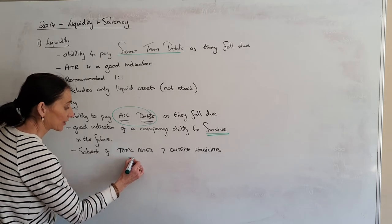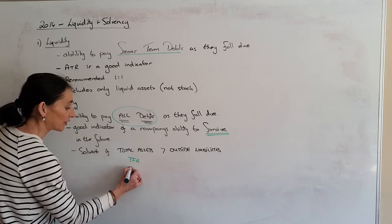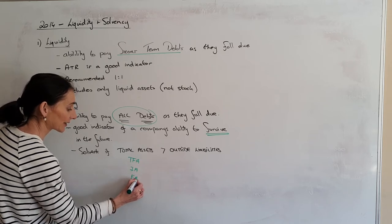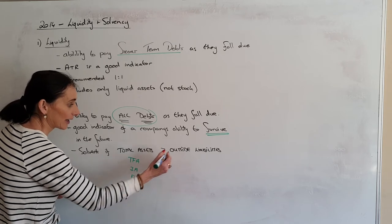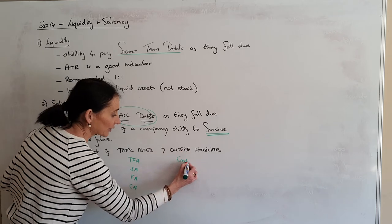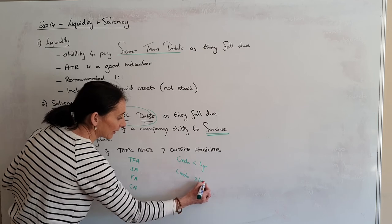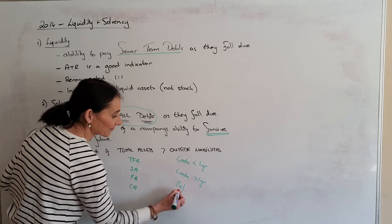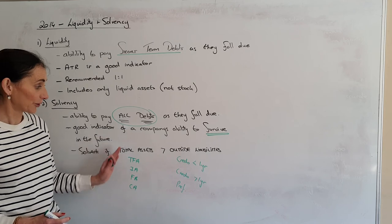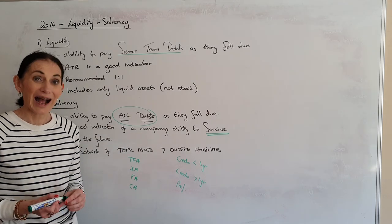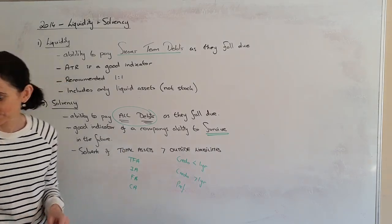Now your total assets is made up of tangible fixed assets, intangible assets, financial assets and current assets. Outside liabilities is creditors less than one year, creditors greater than one year and your preference. So you want to make sure your total assets are bigger than your outside liabilities. Thank you.